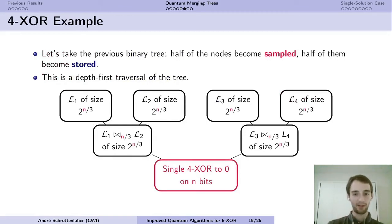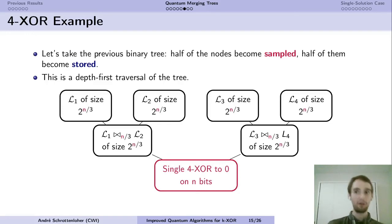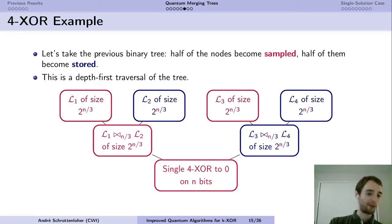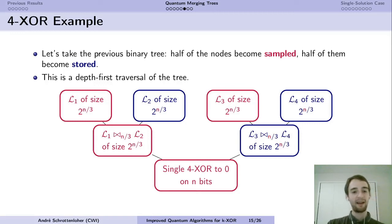For the 4-XOR example, we use the same binary tree, but some nodes are sampled (sampling algorithms) and some nodes are stored — pre-computed beforehand. We want to sample the root node, which means finding the solution. To do so, we need a sampling algorithm for the level-1 node and have the other stored. The algorithm constructs L₂, constructs L₃ merged with L₄, and then makes a search in L₁ for an element that ultimately yields a 4-XOR solution.